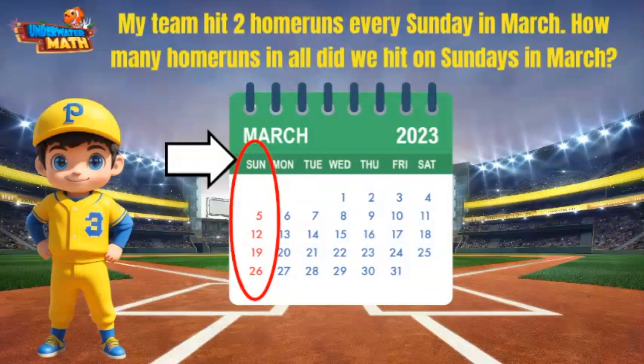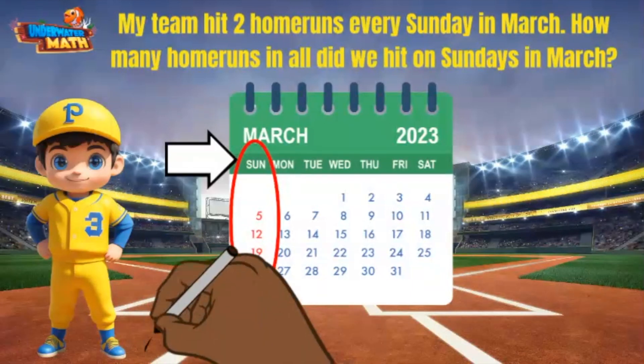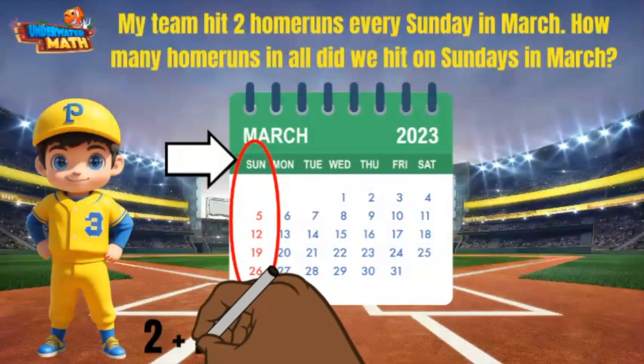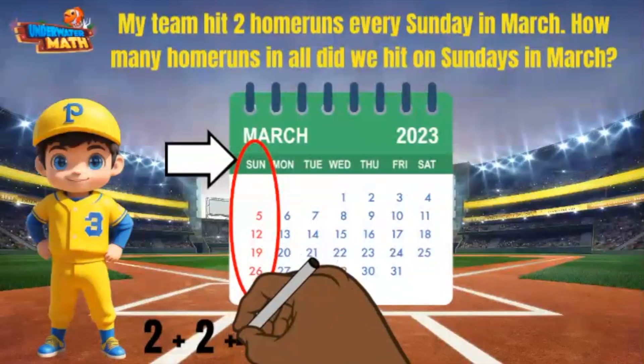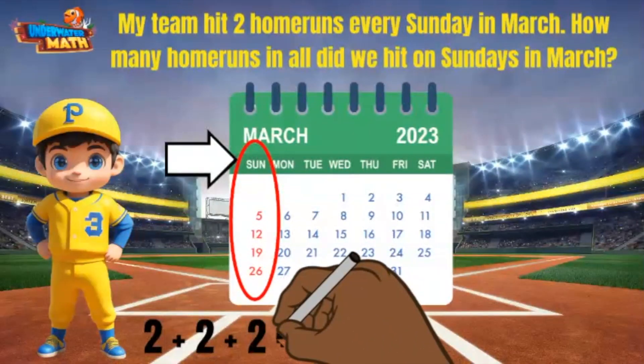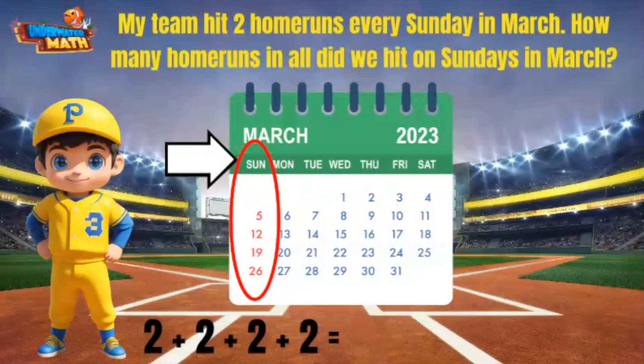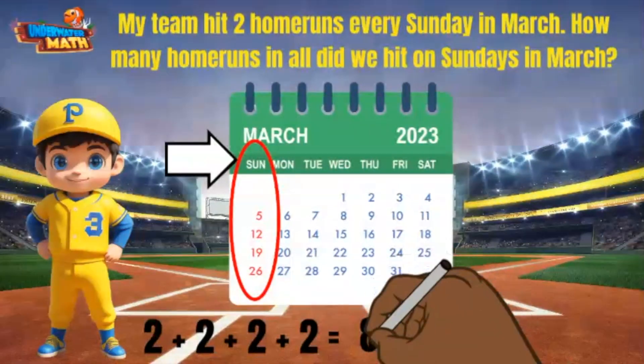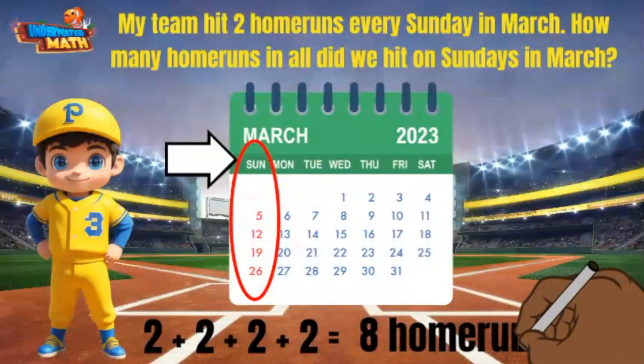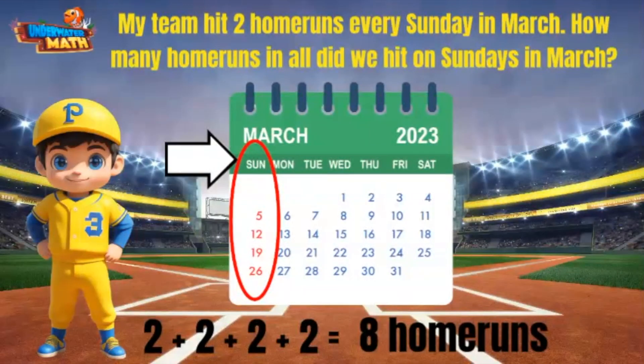Since we hit two home runs during each of those Sundays, I can add two four times to find the total number of home runs. 2 plus 2 plus 2 plus 2 equals 8. My team hit eight home runs in March.